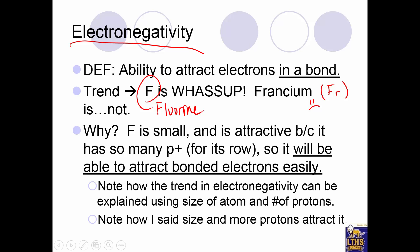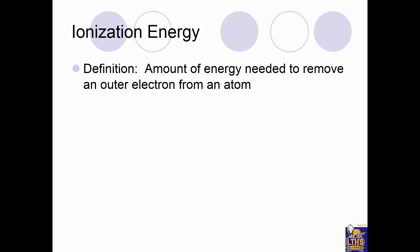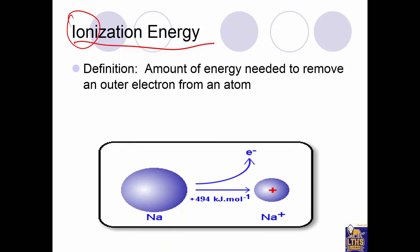So nuclear pull has to do with number of protons, and atomic radius is the size of the atom. The smaller an atom is and the more protons it has, the more it can attract electrons from another atom to make a bond — that's electronegativity. Now, ionization energy: here's the definition. It's the amount of energy needed to remove an outer electron from an atom.